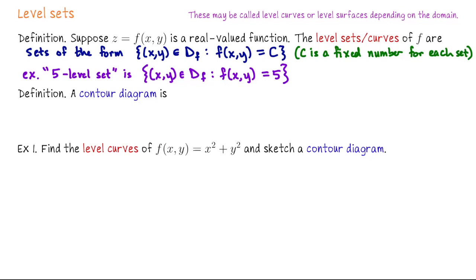Then given a function and a family of level sets, we often put together what we call a contour diagram, which if you've ever gone hiking is kind of like a topographic map. It's a picture of several level sets in the domain.